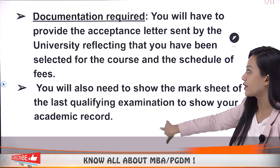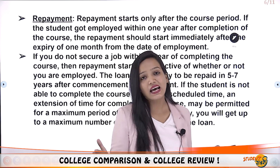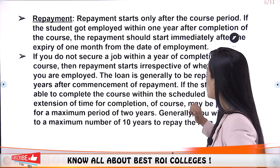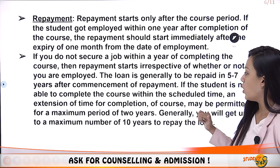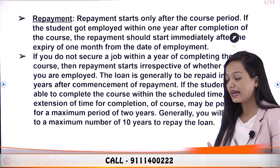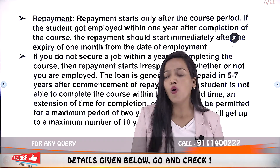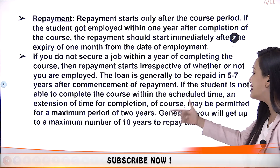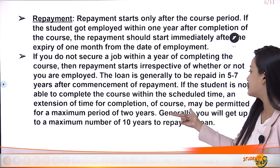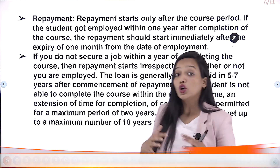Regarding repayment: for example, if you have enrolled for a 3-year course, you get 1 year after completion, so repayment starts 4 years later. The repayment period is usually 5 to 7 years. If your course is not completed within the scheduled period due to backlogs or other reasons, you can get an extension for a maximum of 2 years for course completion.